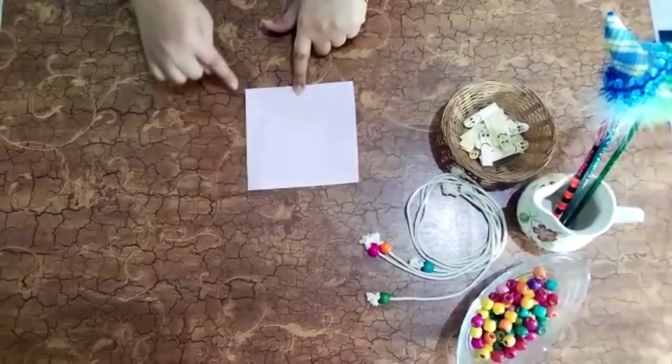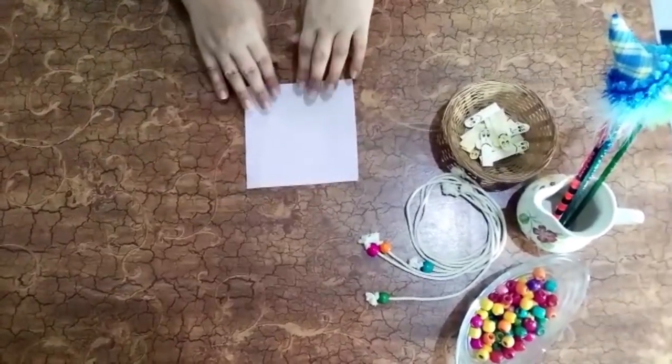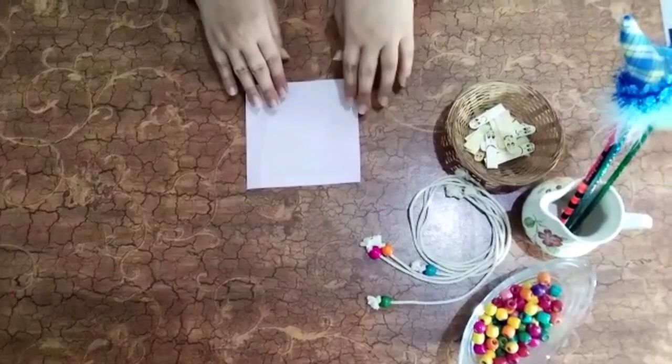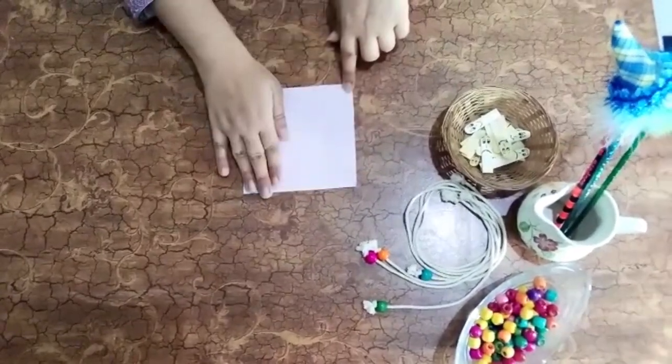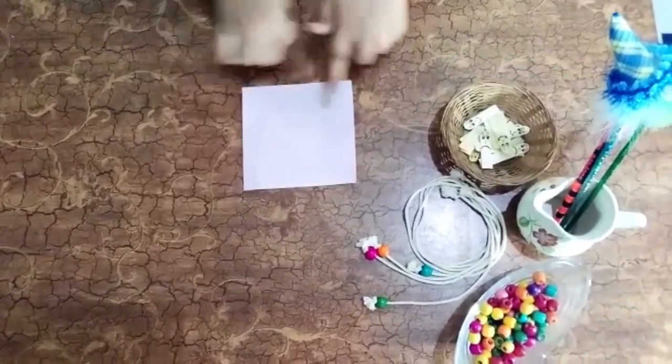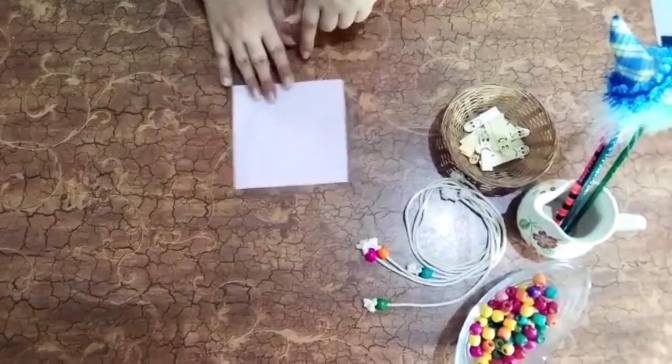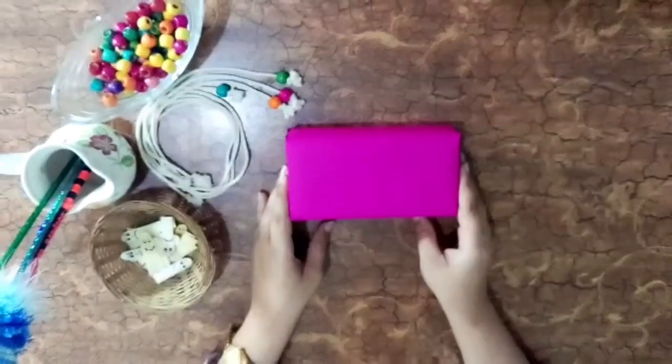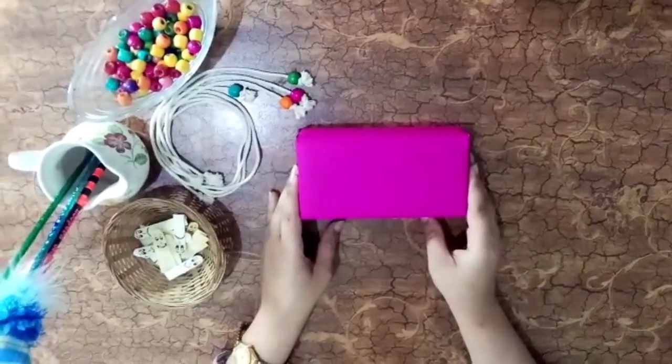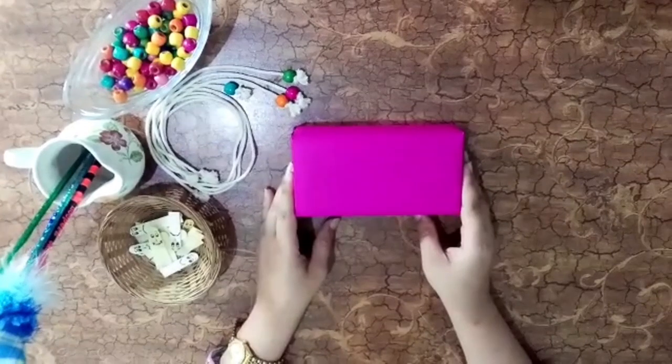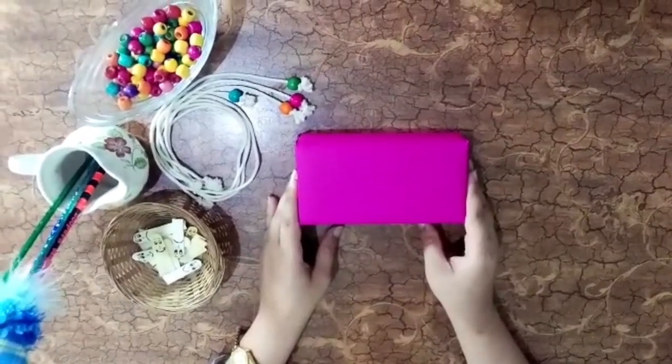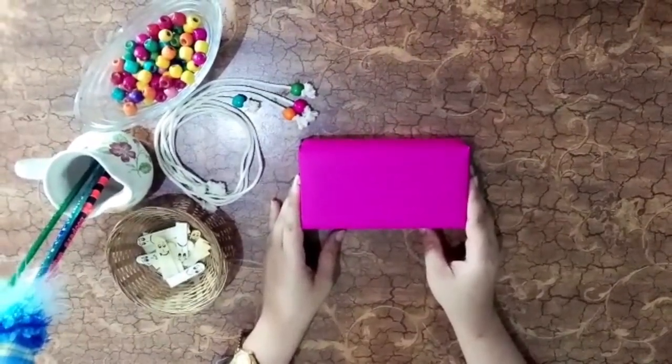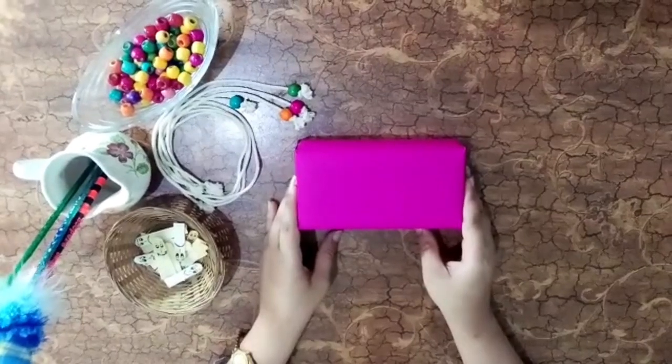Now it's time for the 3D shape. One very important property of the 3D shape is it has some faces, some vertices, and some edges in it. So now let's see how many faces, vertices, and edges this 3D shape has.